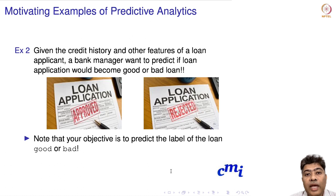Here is a second example on predictive analytics. Imagine you are a manager of a bank. Someone applies for a bank loan. Given the credit history and other features like educational qualification, whether the person works or not, etc., the bank manager wants to predict if the loan application would become a good or bad loan.